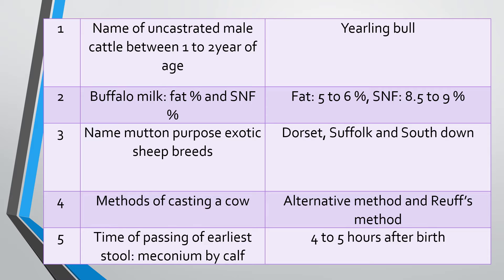Question one: Name uncastrated male cattle of age between one to two years. Answer: It is called a yearling bull.